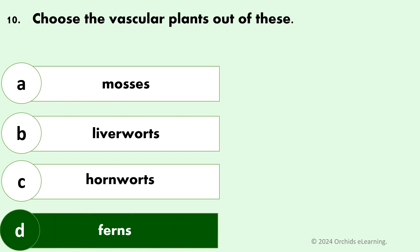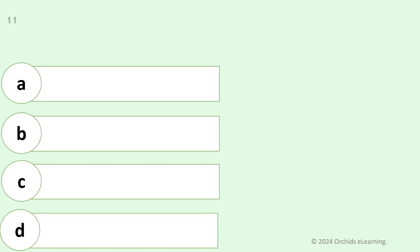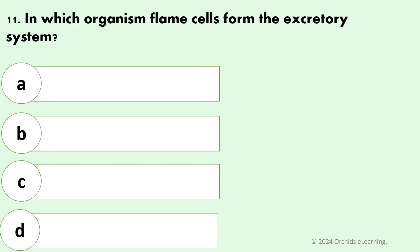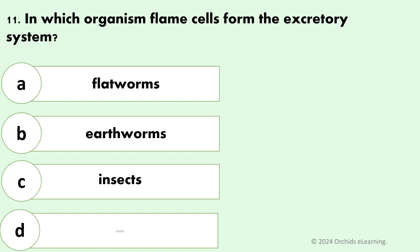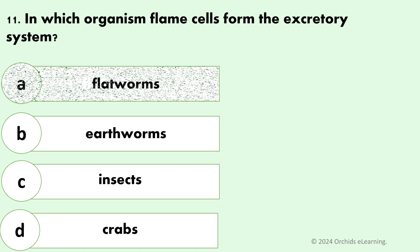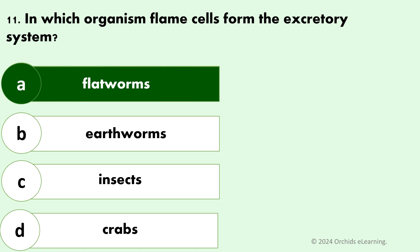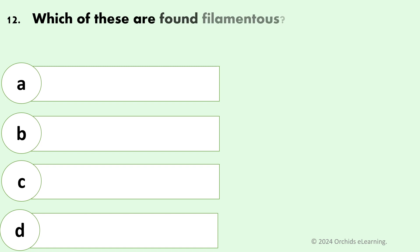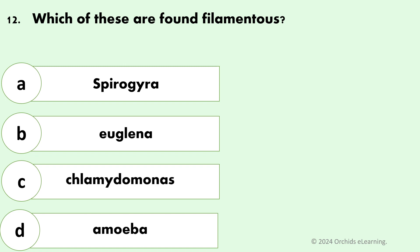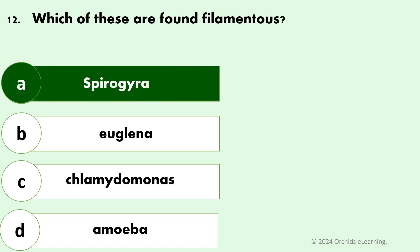Answer: D — Ferns. In which organism do flame cells form the excretory system? Answer: A — Flatworms. Which of these are found filamentous? Answer: A — Spirogyra.